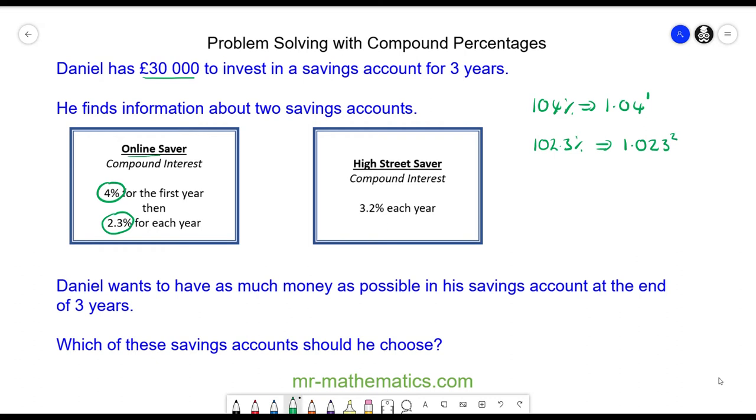The total investment is £30,000 multiplied by the first year of interest, which is 1.04, and then the next interest, which is 1.023 squared.